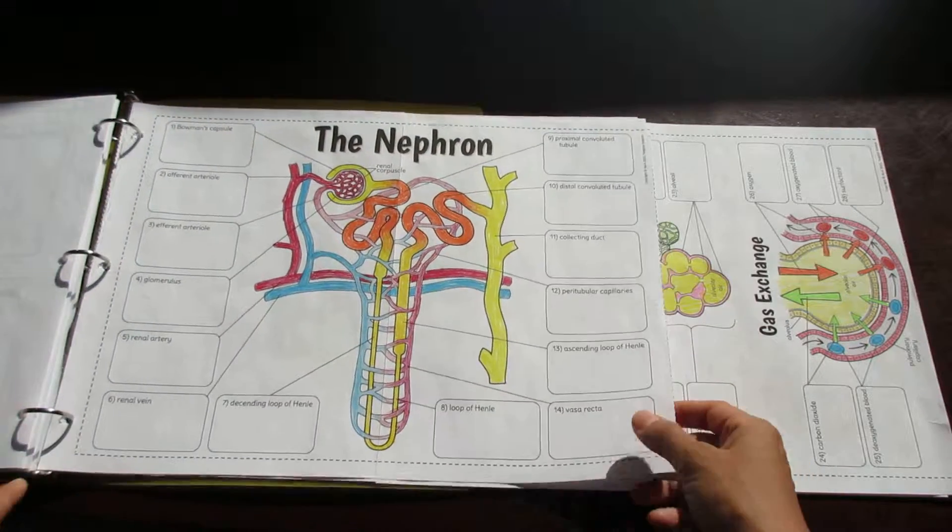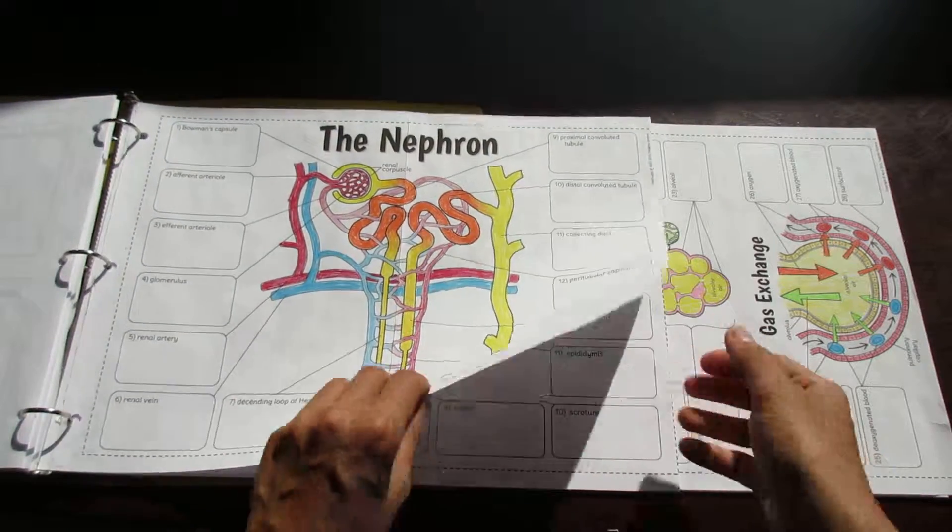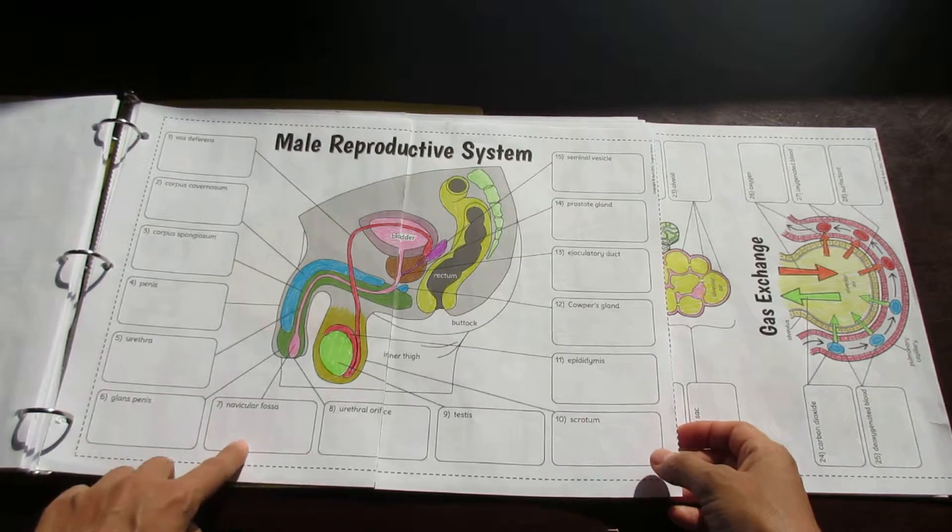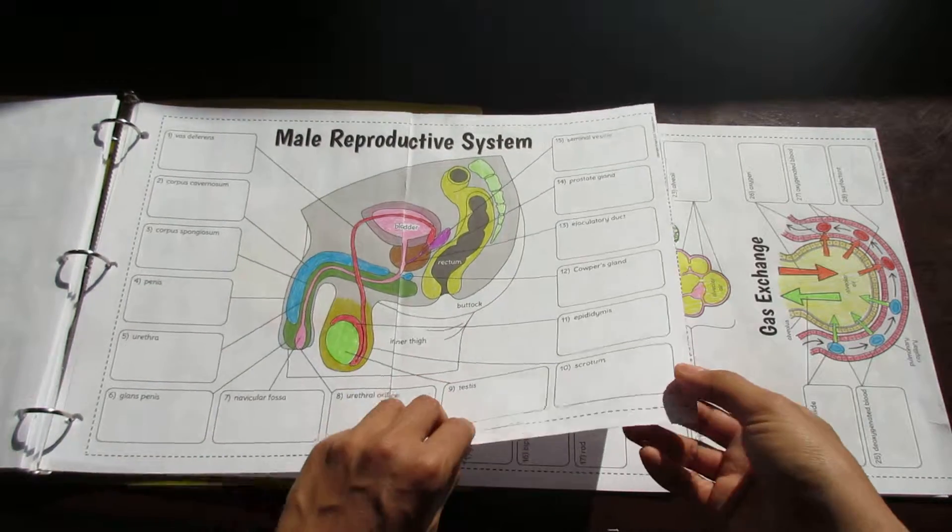Here's a nephron which is a great follow-up to the urinary system. Here's the male reproductive system that goes really well with the female reproductive system that you saw earlier.